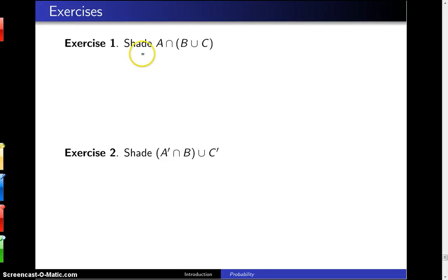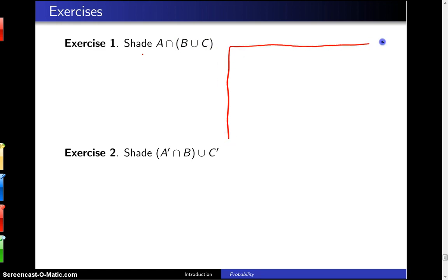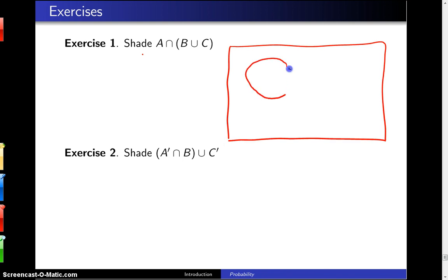The question here is to shade A intersect B union C on a Venn diagram. We'll start by drawing the Venn diagram. The most general way to draw the sets A, B, and C are in this fashion.